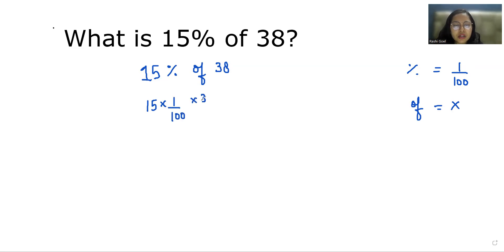Times 38, so 15 by 100 times 38. Now we will reduce it. We start cancelling. First, 38 and 100 are both even numbers, so we'll divide by 2. 2 times 19 and 2 times 50.